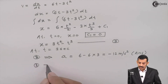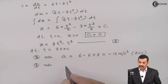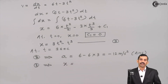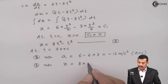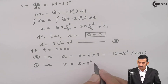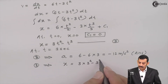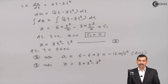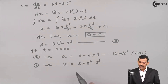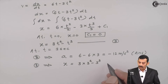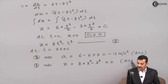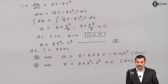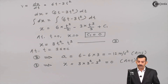Next, substituting t = 3 seconds into equation 3 (position equation): x = 3(3²) minus 3³ = 3(9) minus 27 = 27 minus 27 = 0 meters. So at t = 3 seconds, the position is 0. These are the answers for Part 1.